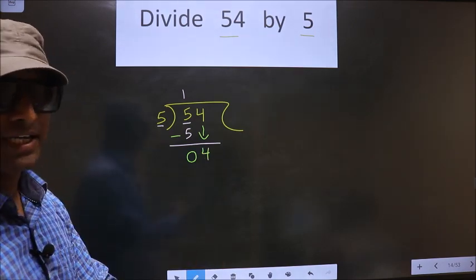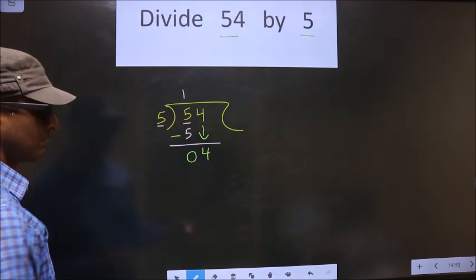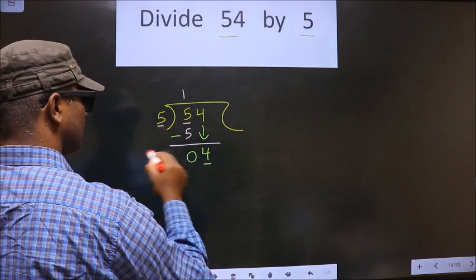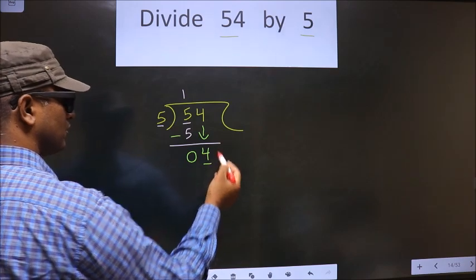Now is where the mistake happens. And the mistake is this: here we have the number 4. 4 is smaller than 5. So what many do is they put a decimal and take 0 here.